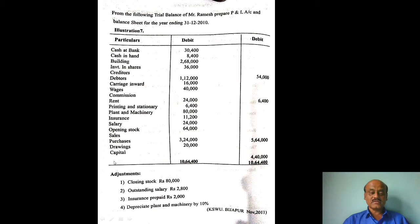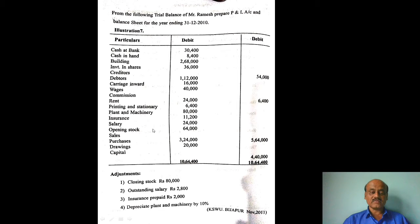So this is the trial balance. Cash at bank — assets balance. Cash in hand — assets. Building — assets. Investment — assets. Creditors — liabilities. Debtors — assets. Carriage inwards — trading account debit side. Wages — trading account. Commission — credit side income, profit and loss. Opening stock — trading account debit side. Sales — credit side of trading account. Purchases — debit side of trading account. Drawings — capital less, balance sheet liability side. Capital — liability side, Rs. 4,40,000.